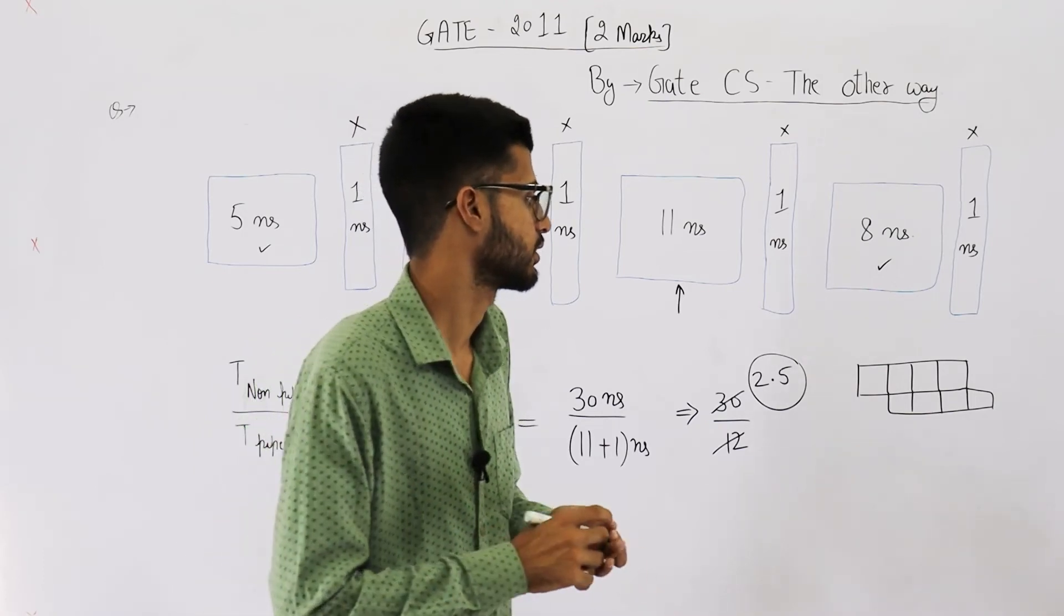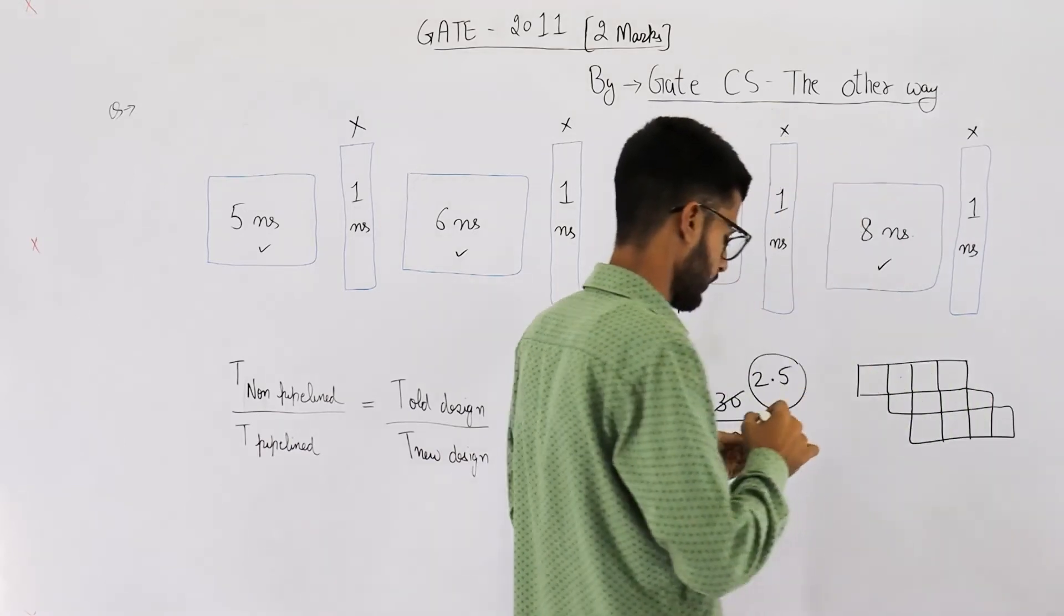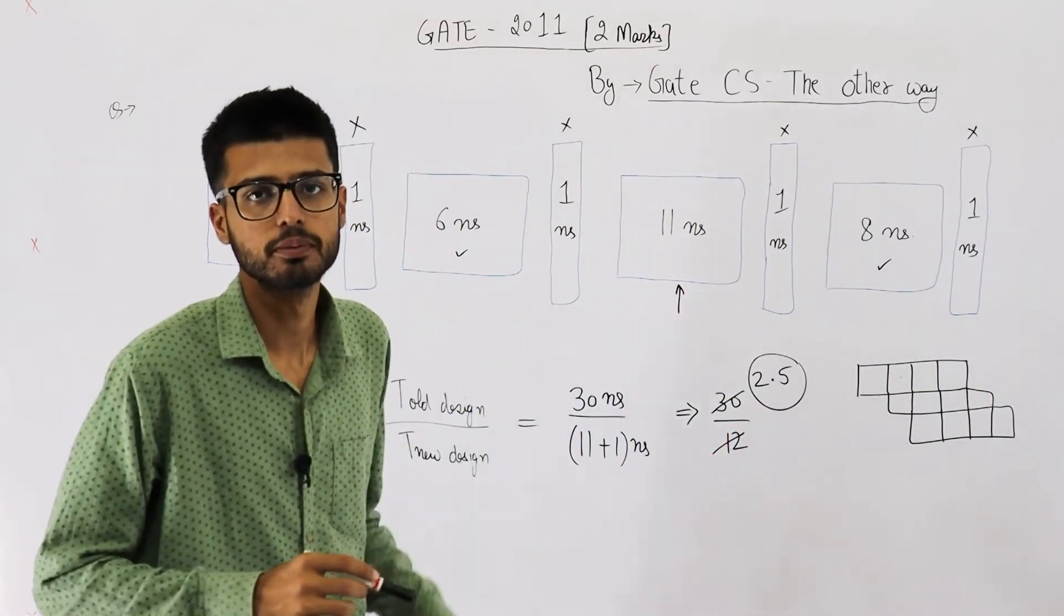For 3 instructions, let's see, average CPI will be. Average CPI now is 2.